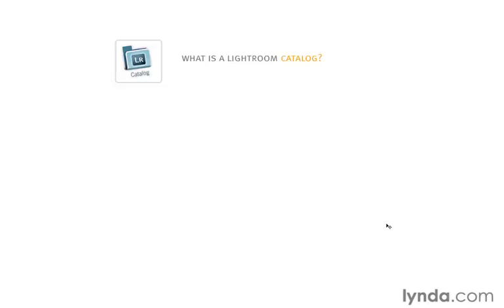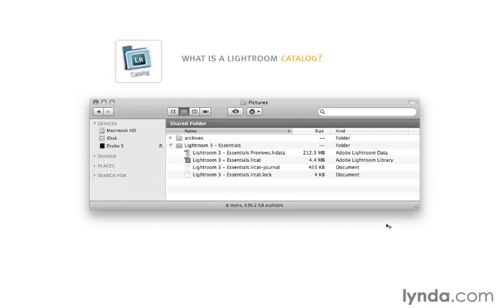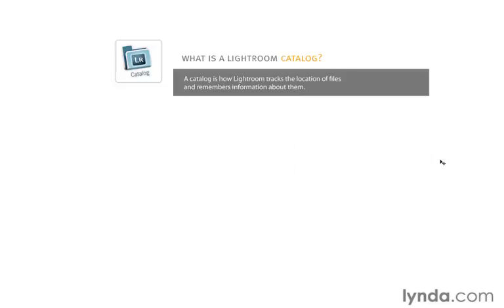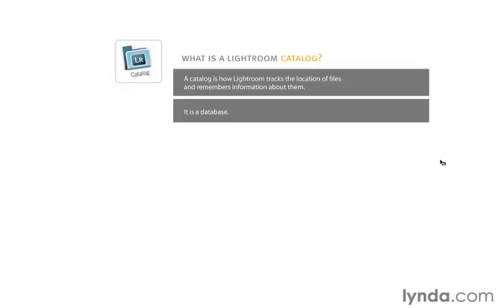It's worth asking the question: what is a Lightroom catalog? If you go ahead and take a look at your catalog, one of the things you'll discover is there are simply two little files. You'll notice that we have previews and then also the catalog file itself. Both of these files together really make up our overall catalog. And essentially, this catalog is how Lightroom tracks the location of files and remembers information about them. It is a database.